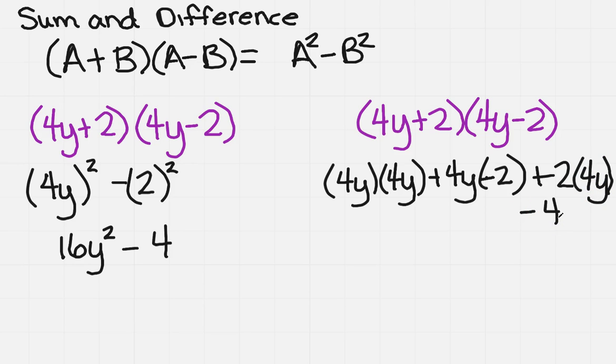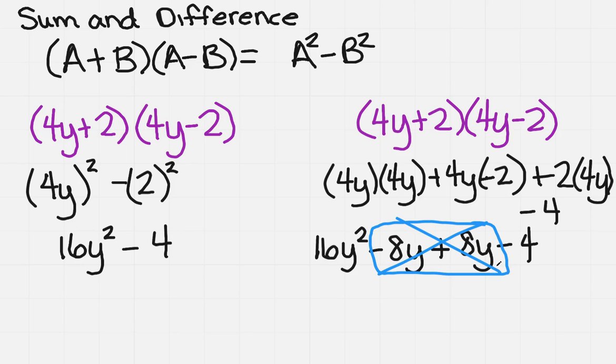Now, when I look at this, I notice that I need to simplify. So this is going to be 16y squared minus 8y plus 8y minus 4. And I notice that the middle two terms are opposite one another, so they're going to cancel each other out,